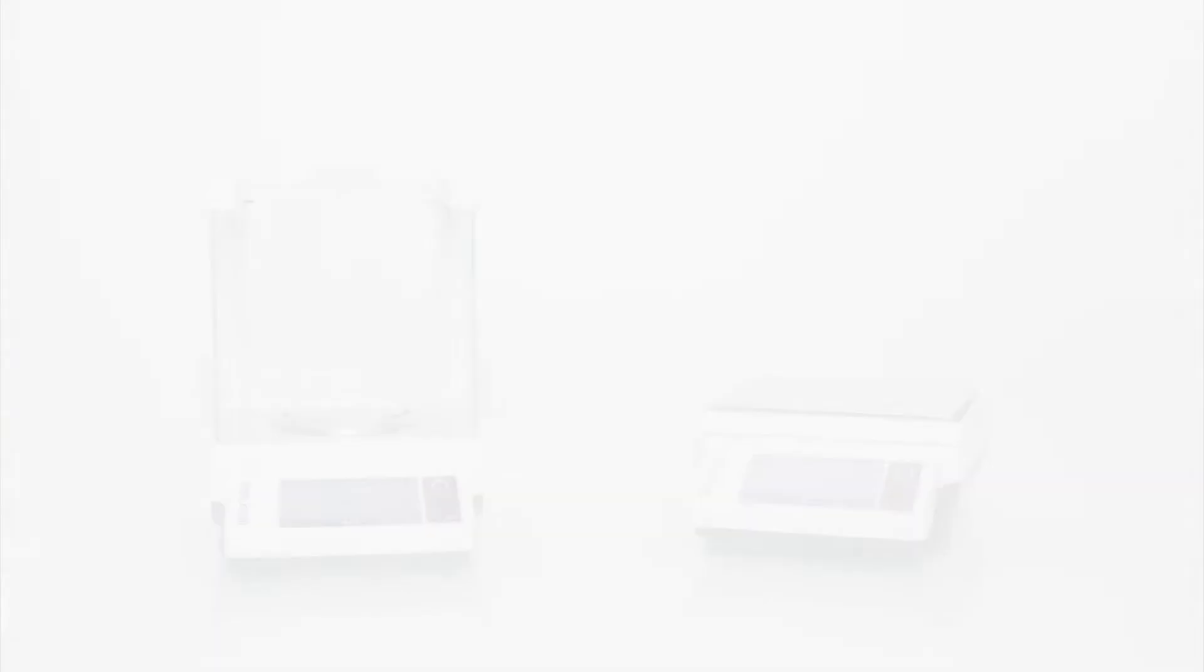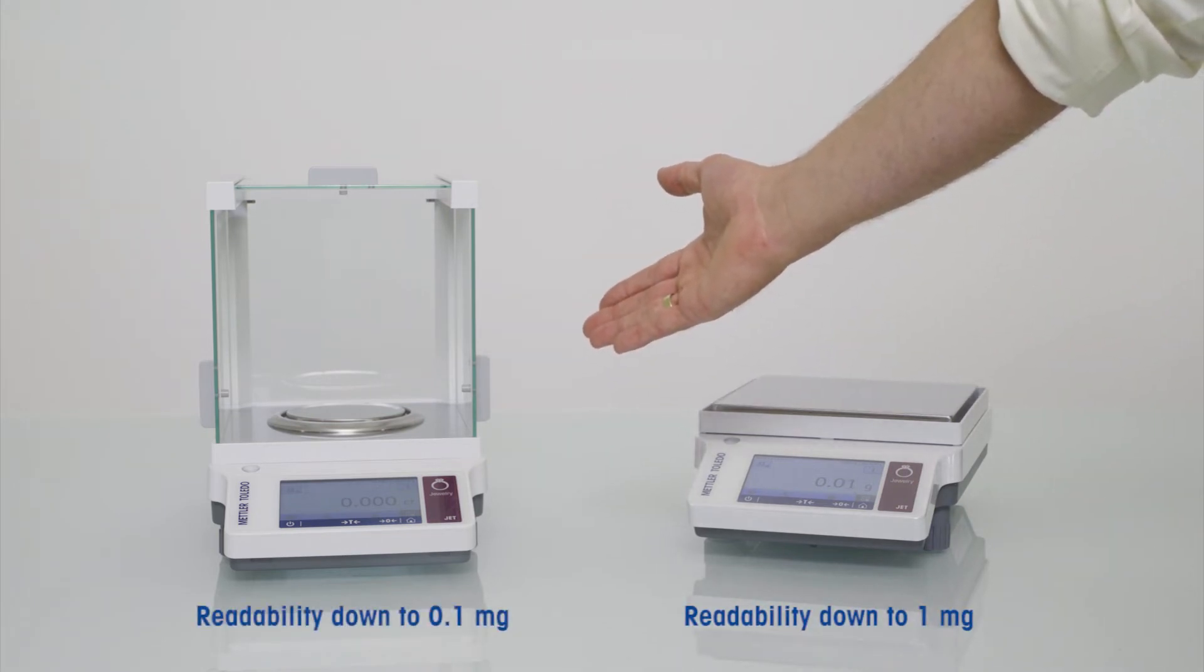Let's have a closer look. The JET on the right side is a gold balance with readabilities down to 1 mg. On the left side you can see a carat balance which has a readability down to 0.1 mg.